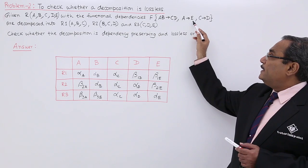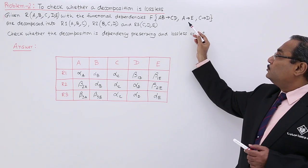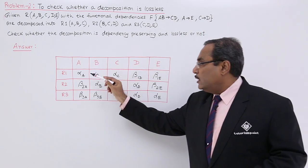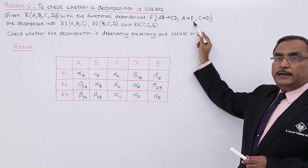Now go for A determines E. Are you finding the same value for A? Always we should consider those attributes which will be on the left hand side of the functional dependency. You are not finding the same value for A. That is why we should not do any update in E.